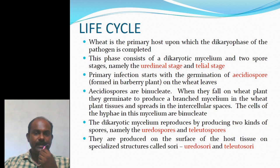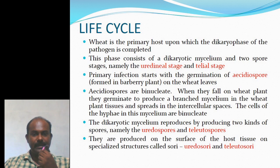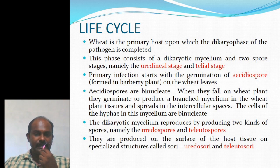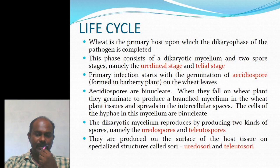Aeciospores are binucleate. When they fall on the wheat plant, they germinate to produce a branched mycelium in the wheat plant tissues that spreads in the intercellular spaces. The cells of the hyphae in this mycelium are binucleate. The dikaryotic mycelium reproduces by producing two kinds of spores: uredospores and teliospores. These are produced on the surface of host tissue on specialized structures called sori — uredinia carrying uredospores and telia carrying teliospores.